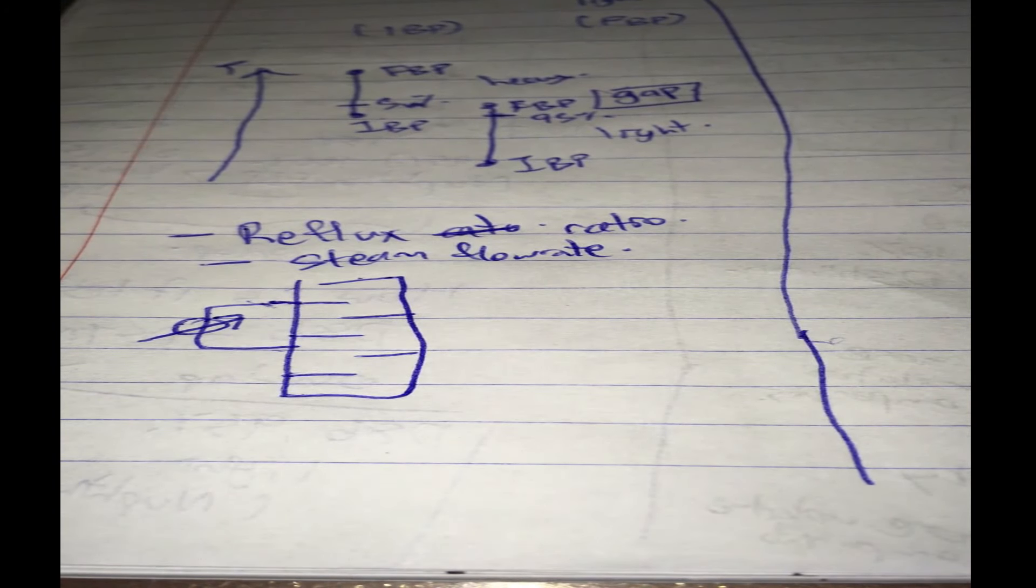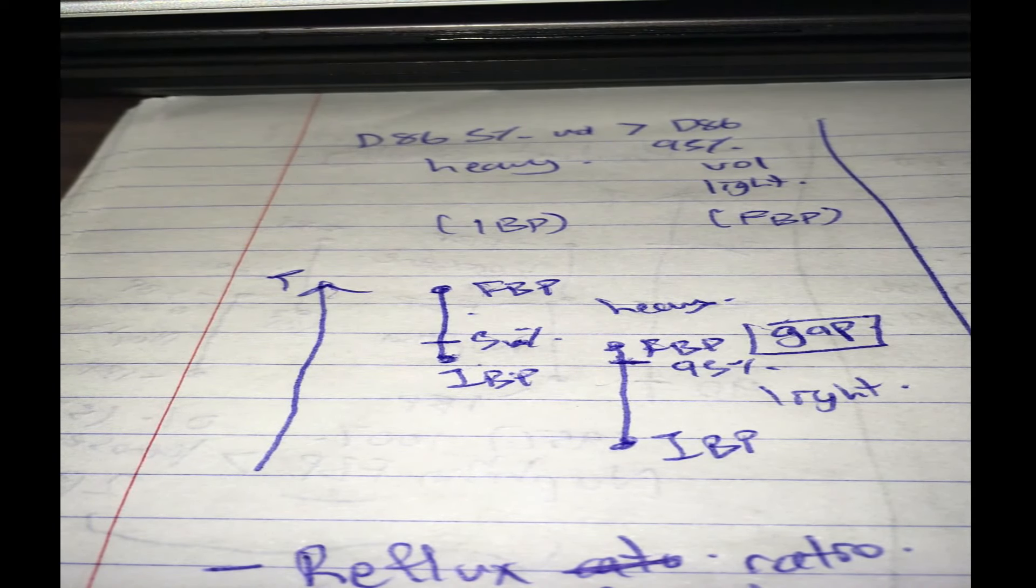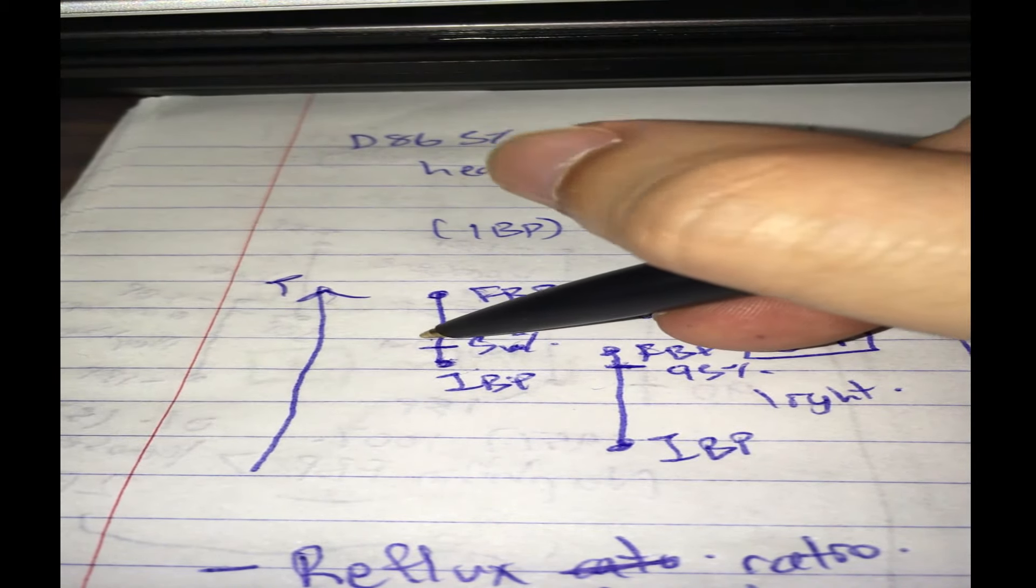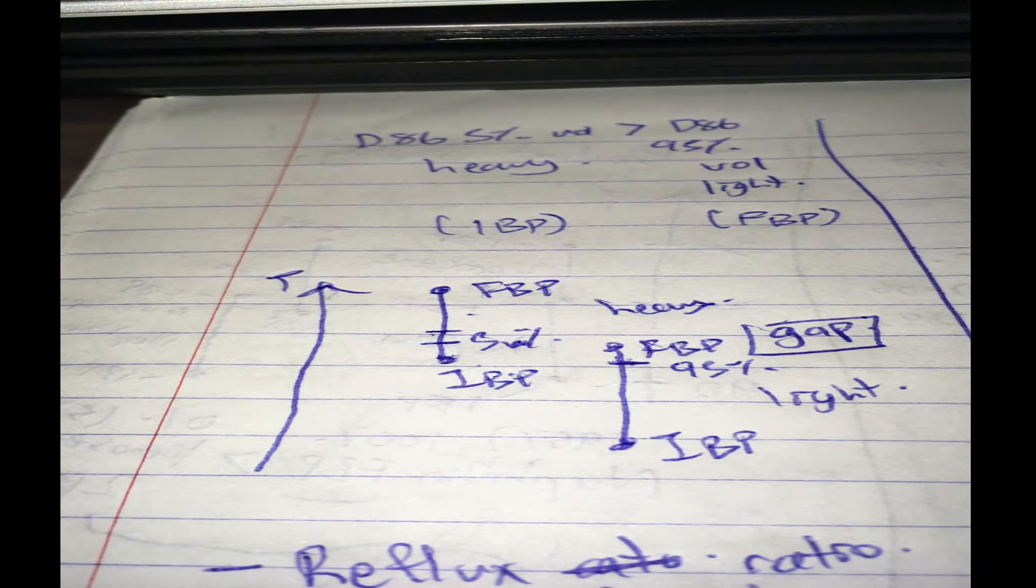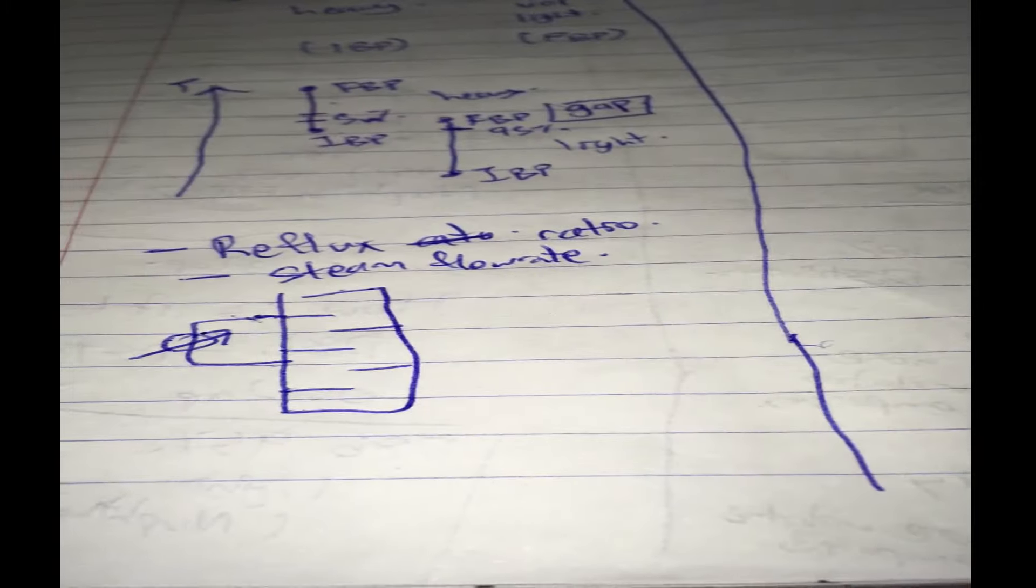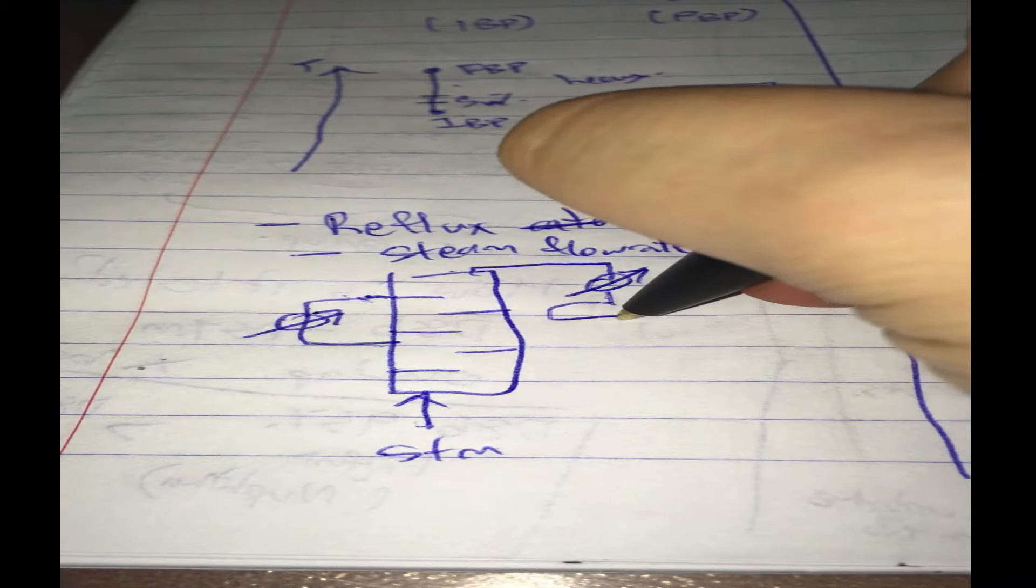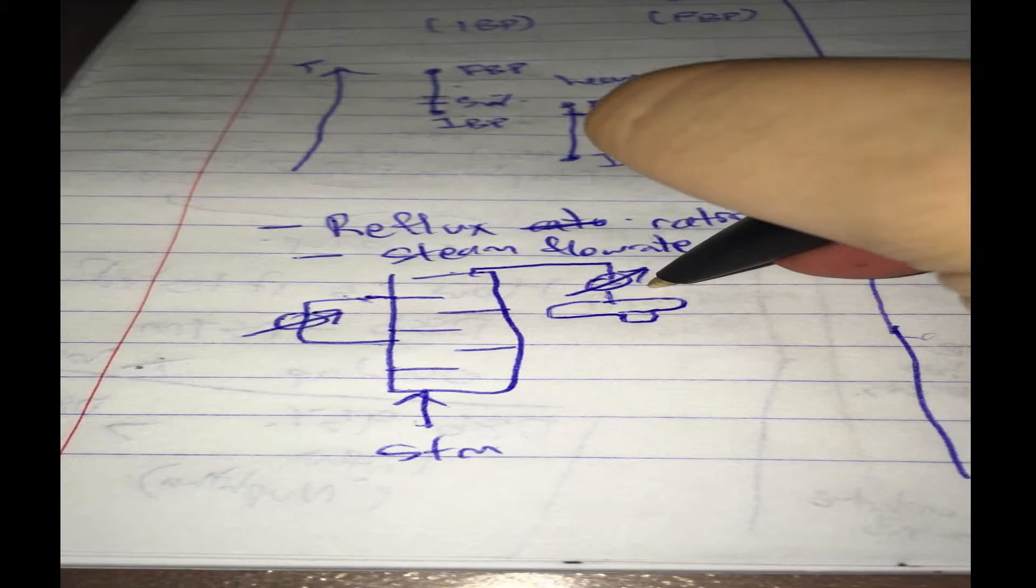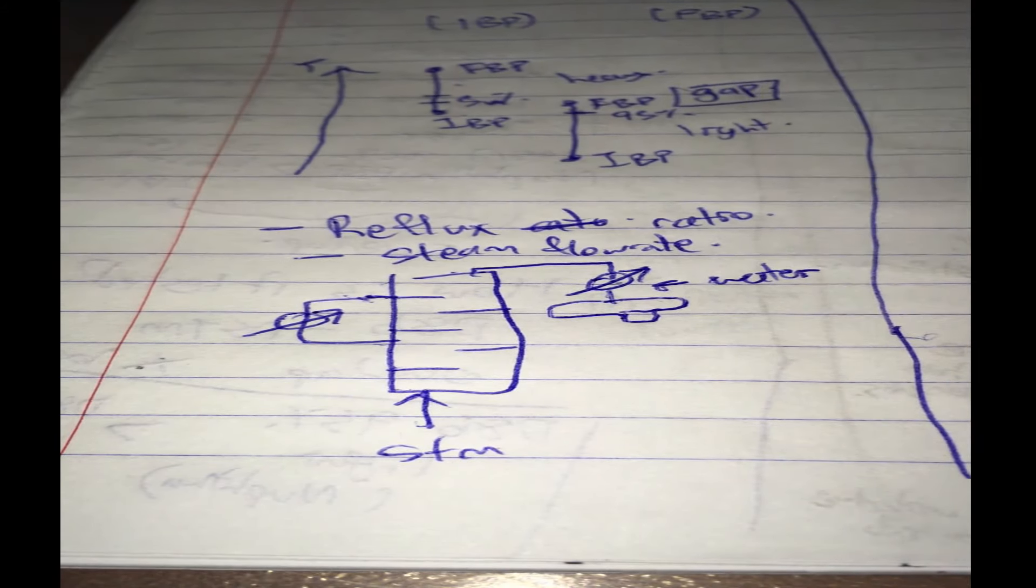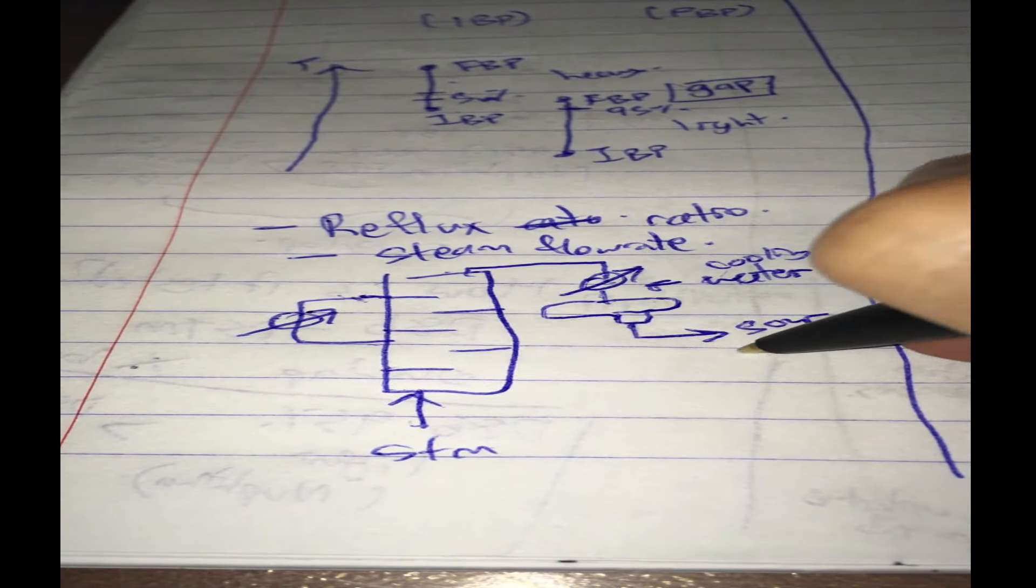So besides the reflux ratio you can adjust the steam flow rate. So that helps you to strip off the light ends. So if you want, let's say your initial boiling point to be higher, it means that your cut of this product has less volatile components on the whole, it's less volatile. So to do that you kind of increase your stripping steam. However you know that increasing stripping steam is going to increase the cooler load, meaning to say the more steam you inject into your tower, the more steam is going to condense in the overhead, the more steam is going to condense here. So you've got to input more cooling water and other stuff, and of course the more sour water you'll need to collect thereafter.